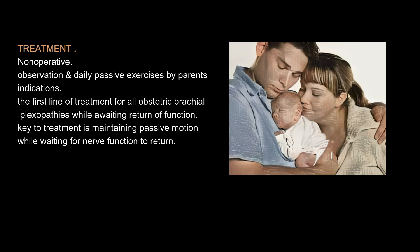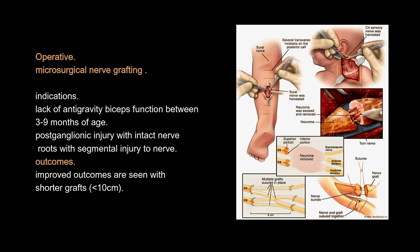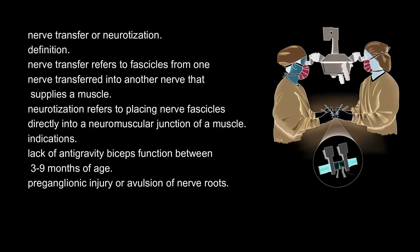Treatment: Non-operative management consists of observation and daily passive exercises by parents and is the first line of treatment for all obstetric brachial plexopathies while awaiting return of function. Key to treatment is maintaining passive motion while waiting for nerve function to return. Operative options include microsurgical nerve grafting, indicated for lack of antigravity biceps function between 3 to 9 months of age or postganglionic injury with intact nerve roots and segmental injury; improved outcomes are seen with shorter grafts. Nerve transfer or neurotization is indicated for lack of antigravity biceps function between 3 to 9 months or preganglionic injury or avulsion of nerve roots. Nerve transfer refers to fascicles from one nerve transferred into another nerve supplying a muscle; neurotization refers to placing nerve fascicles directly into a neuromuscular junction of a muscle.